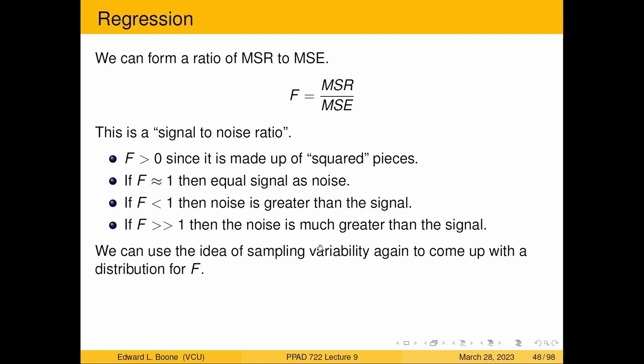So remember, we're going to be calculating this off of multiple data sets. So we want to come up with a distribution for F so we know how big is too big. This F greater than, much greater than one, is big enough? Is five big enough? Is 10 big enough? Is two big enough? We don't know. So we want to come up with a distribution.